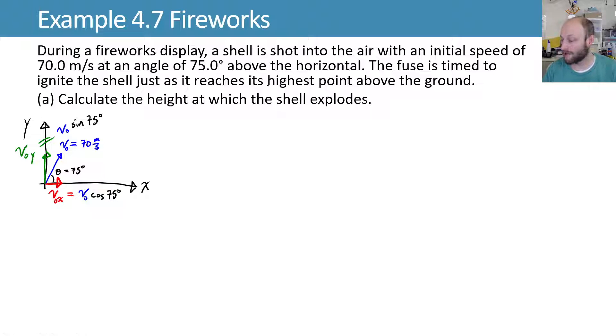So the fuse is timed to ignite the shell just as it reaches its highest point above the ground. One thing we know about the highest point is that the velocity in the y direction has to equal zero at that highest point, because before it had a positive velocity as it was going up, after it has a negative velocity as it's going down. So it passes through zero velocity in the y direction as it's reaching its highest point. So this goes over, and we reach some highest point over here, where vy is equal to zero.